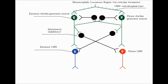The inhibitory neurotransmitter neurons are also activated, so both lower motor neurons are silenced. Theoretically, we won't see any muscle activation whenever both rhythm generators are active at the same time.